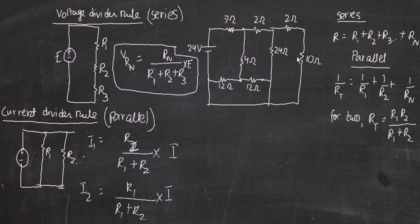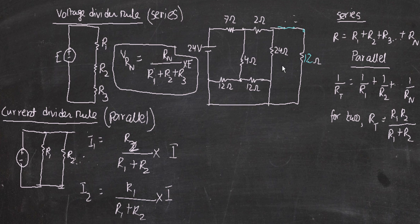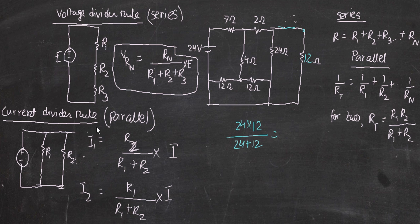Let's start simplifying the circuit. We can see that two ohms and ten ohms are in series, so 2 + 10 = 12 ohms — we combine those into one 12-ohm resistor. Then we can see that 12 ohms and 24 ohms are in parallel, so we calculate: (24 × 12) / (24 + 12) = 288 / 36 = 8 ohms.